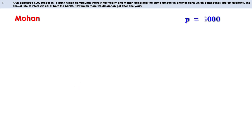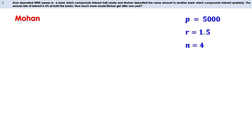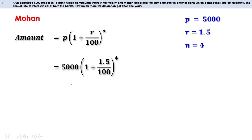Now let us take the case of Mohan. He also deposits 5,000 rupees, so P is 5,000. Annual interest rate is 6%. For Mohan it is quarterly compounding, so R equals 6 by 4, or 1.5. In a year there are four quarter years, so N equals 4. The amount is P into (1 plus R by 100) all raised to N. Replacing, we get 5,000 into (1 plus 1.5 by 100) all raised to 4.